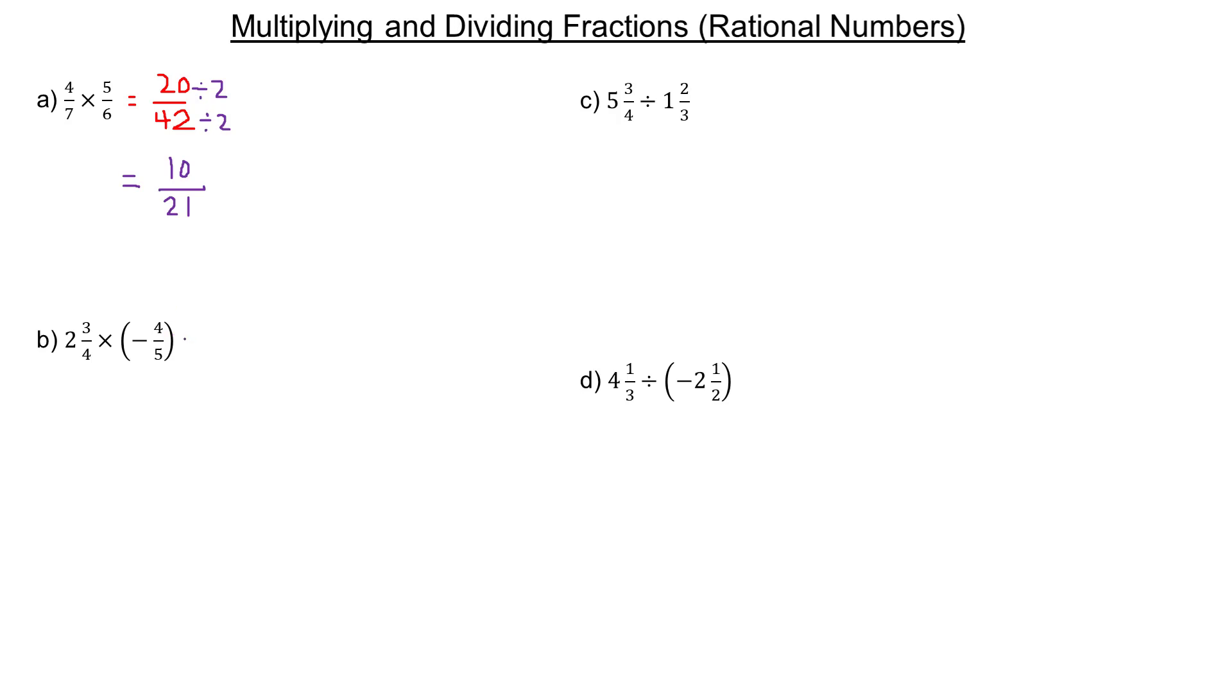In example B, to change 2 and 3/4 to improper form, you go 2 times 4 is 8, then add 3. 8 plus 3 is 11, so that's 11/4. Notice the denominator stays the same. The second fraction is not mixed, so we can write it as -4/5.